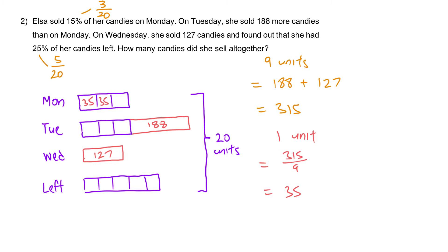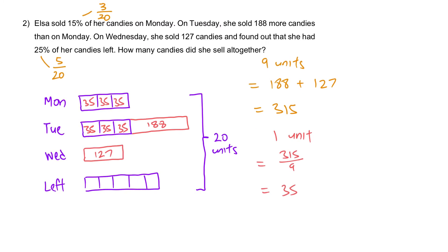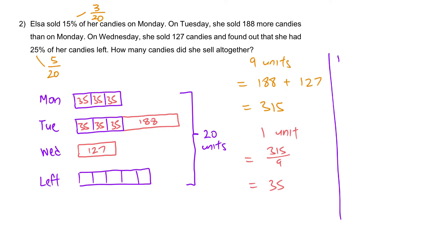1 unit will be 315 divided by 9 to give you 35. So each unit here is 35. How many candies did she sell altogether? We just need to figure out 6 units plus 188 plus 127. The final step. Number of candies she sold altogether. 35 times 6 plus 315, and that is 525.